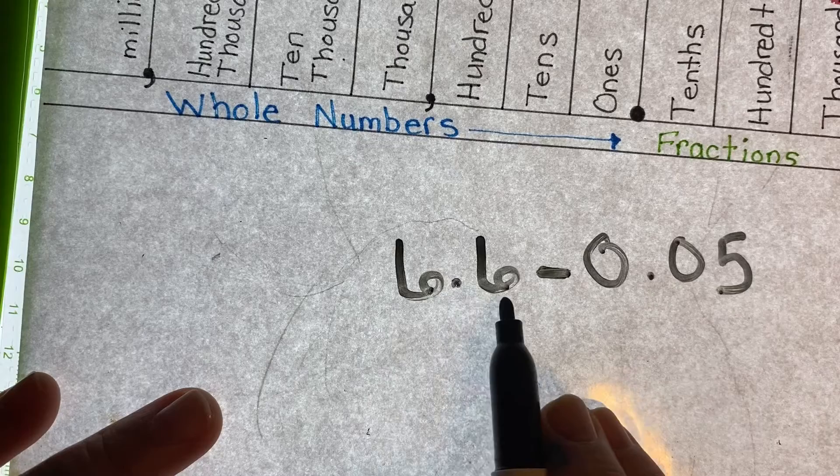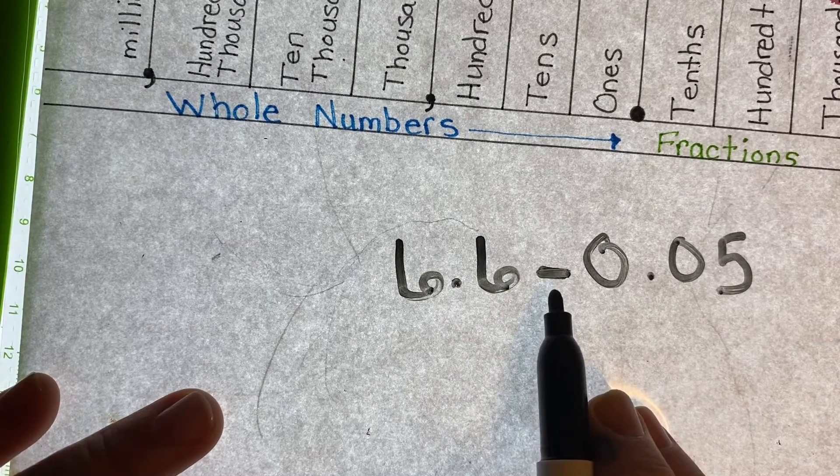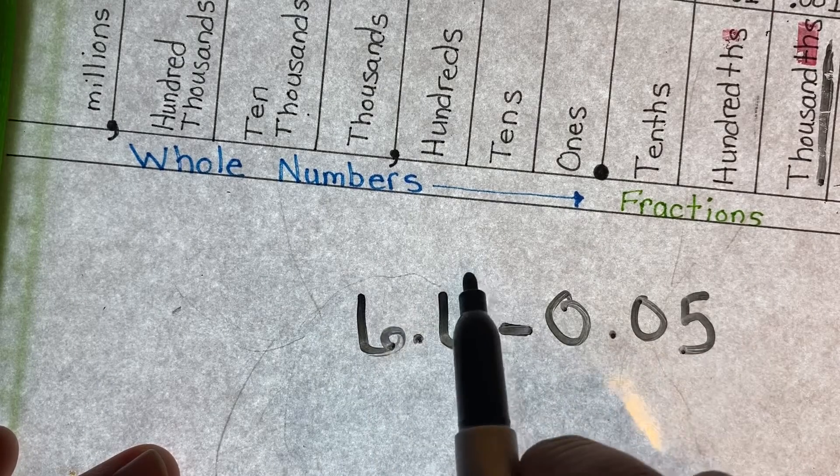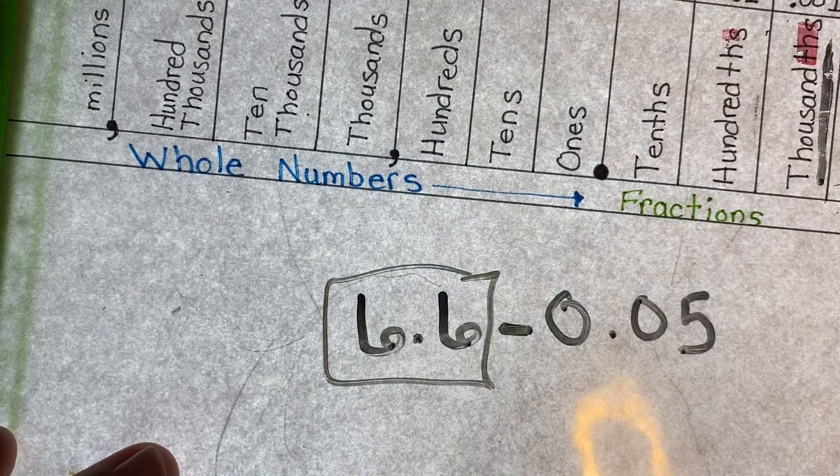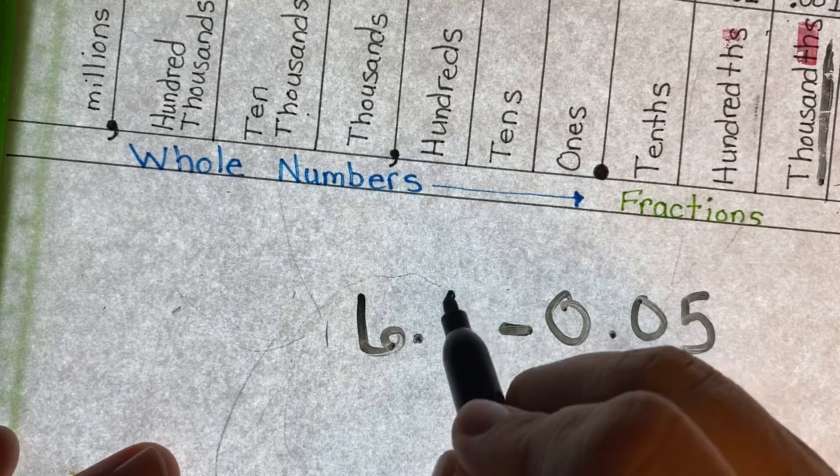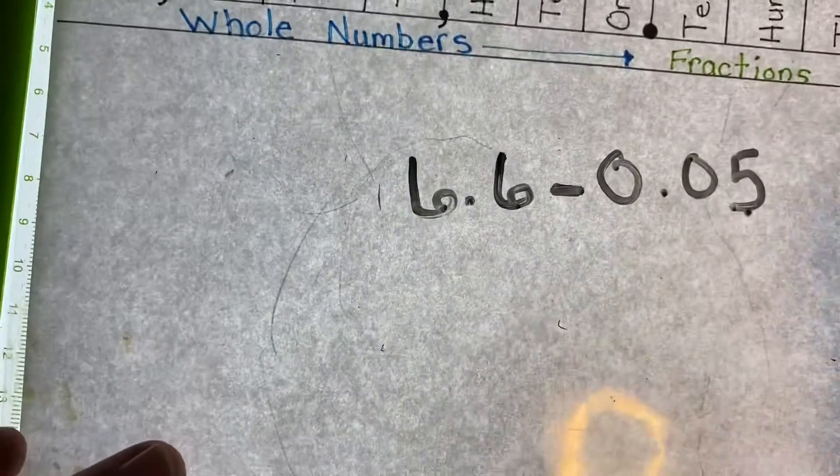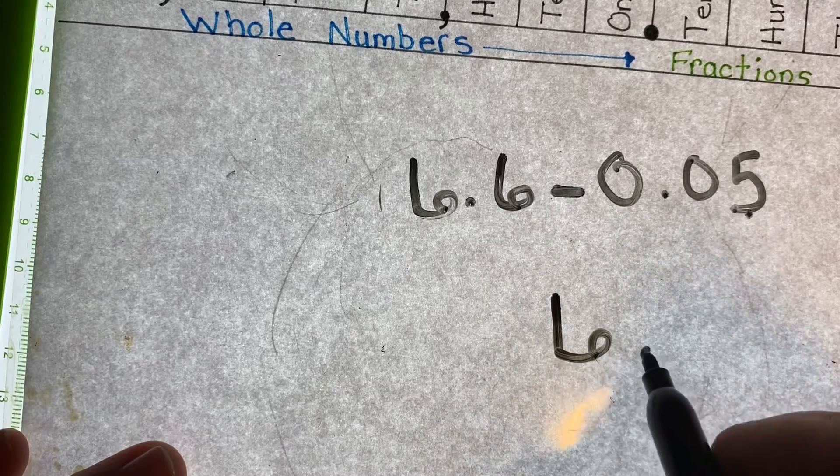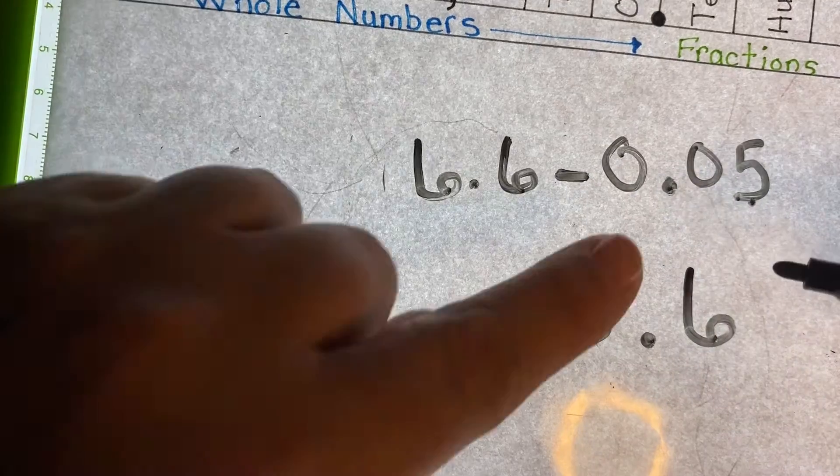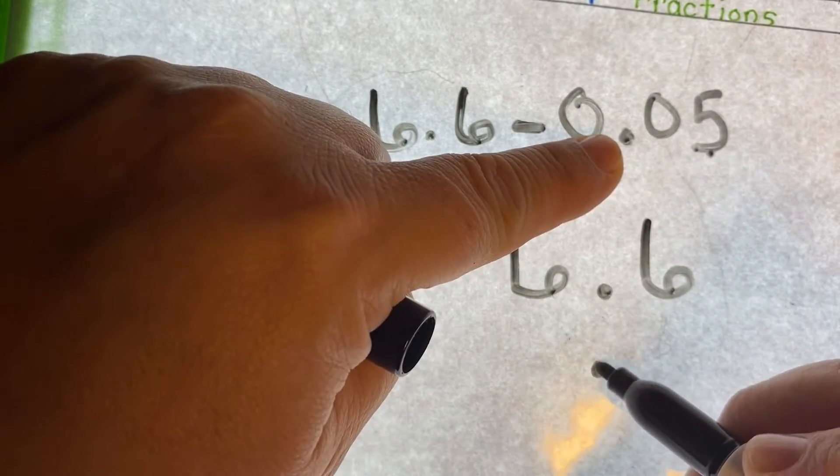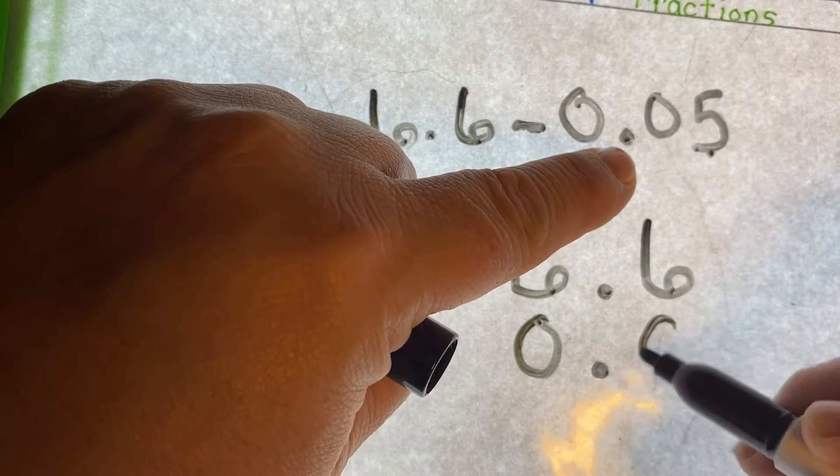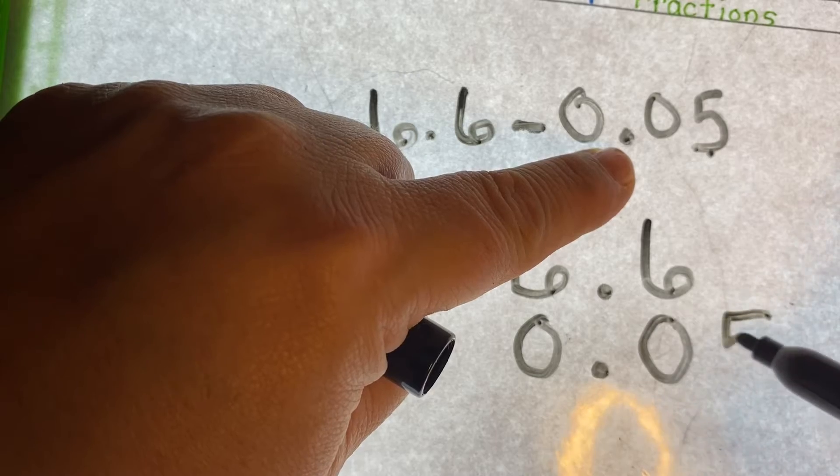So I have six and six tenths minus five hundredths. Well, this is what I have to start. That's all I have. And I have to take away five hundredths. So this number, my larger number goes on top, and I line up my decimal. So here's my decimal. I'm going to bring it right down here. I've got a zero here, I've got a zero here, and I have a five here.